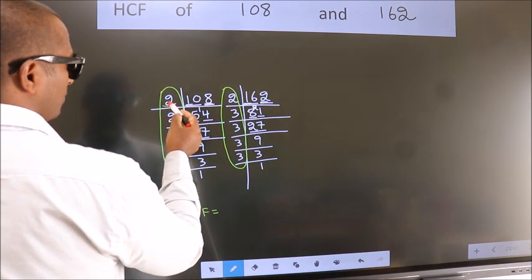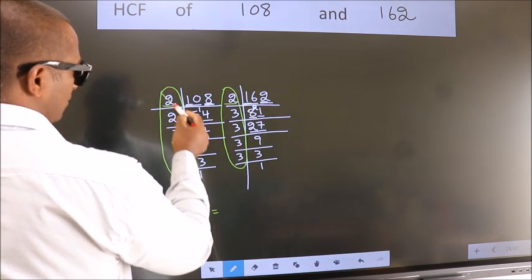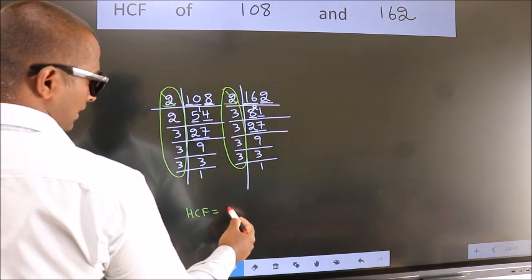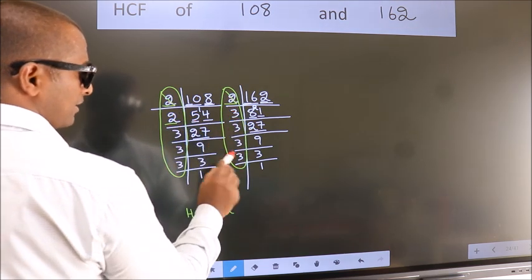Starting with the number 2. Do we have 2 here? Yes. So cut 2 right here. Next number 2. Do we have 2 here? No.